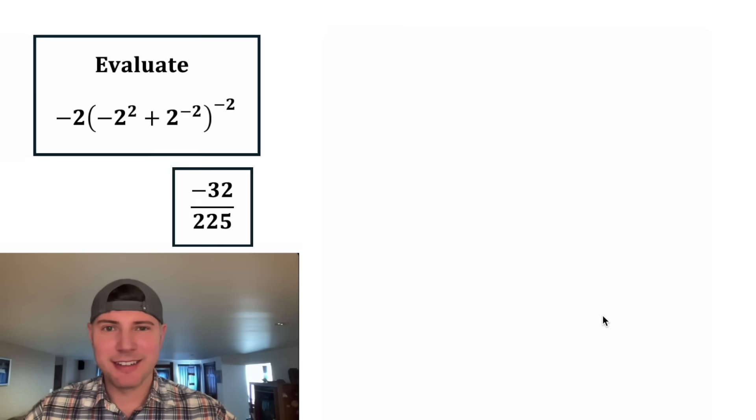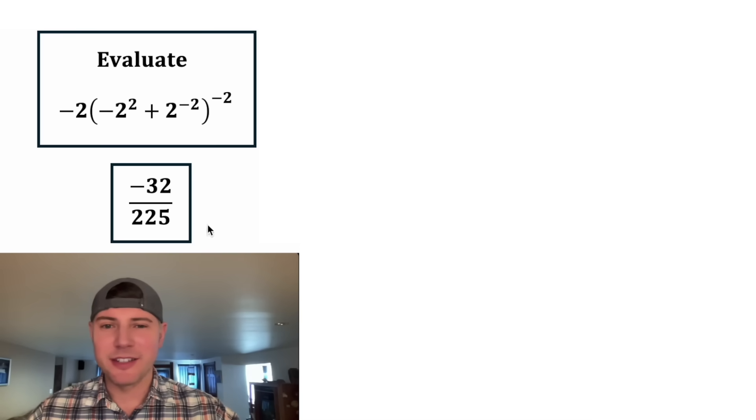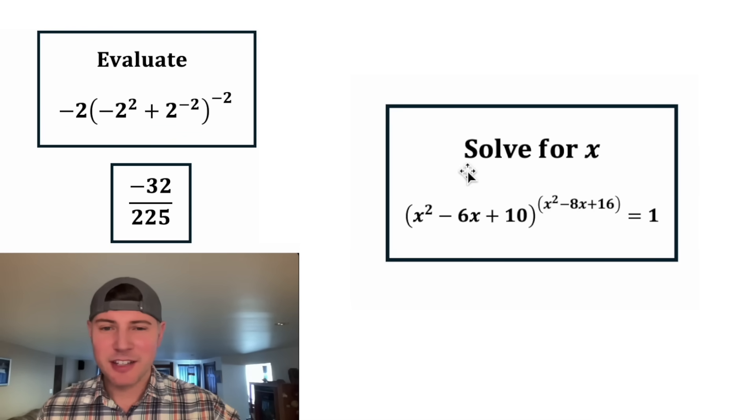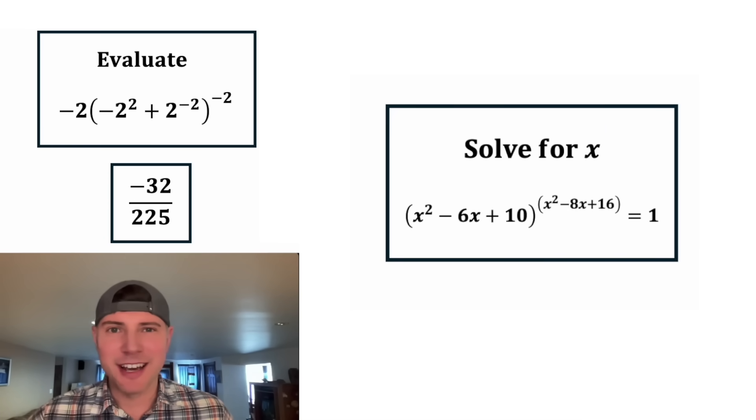How exciting. This fully simplifies to this. And here's tomorrow's question. It says solve for x. And we're given the quantity x squared minus 6x plus 10. Whole thing to the power of the quantity x squared minus 8x plus 16 is equal to 1. This looks like a fun one. How exciting.